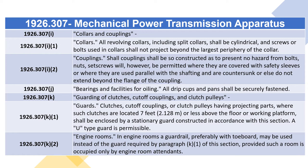1926.307(i)(2) Couplings shall be so constructed as to present no hazard from bolts, nuts, or set screws; however, these will be permitted where they are covered with safety sleeves or where they are used parallel with the shafting and are countersunk or do not extend beyond the flange of the coupling. 1926.307(j) Bearings and Facilities for Oiling: All drip cups and pans shall be securely fastened. 1926.307(k) Guarding of Clutches, Cutoff Couplings, and Clutch Pulleys. 1926.307(k)(1): Clutches, cutoff couplings, or clutch pulleys having projecting parts and located seven feet or less above the floor or working platform shall be enclosed by a stationary guard constructed in accordance with this section. A U-type guard is permissible.